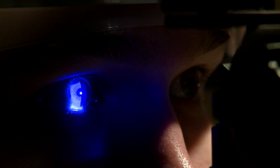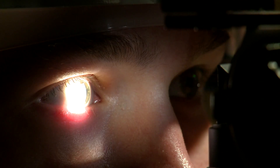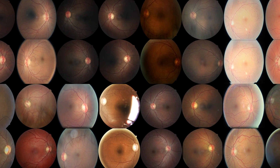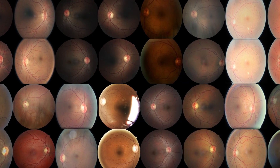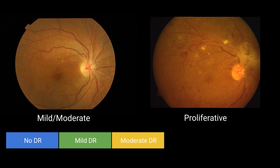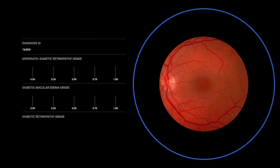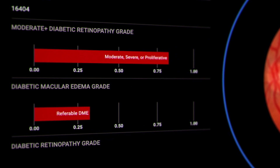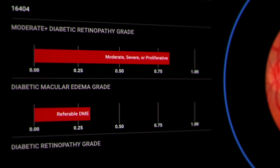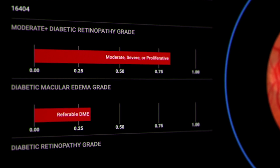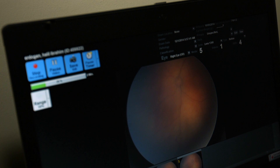Diabetic retinopathy is the fastest-growing cause of blindness. It's a complication of diabetes. We gathered a very large dataset and had doctors grade the images, and then we, using TensorFlow, trained a neural net that does a pretty good job of predicting whether or not there is diabetic retinopathy in the image.